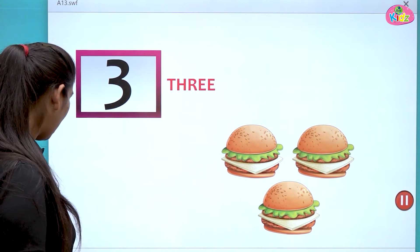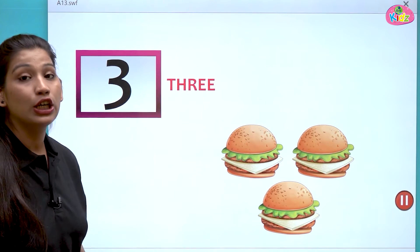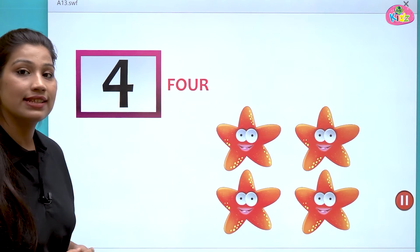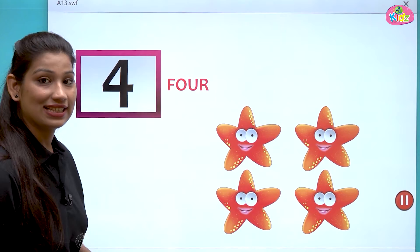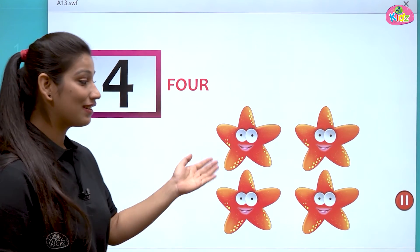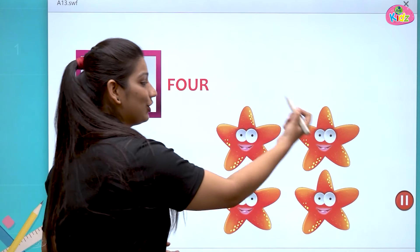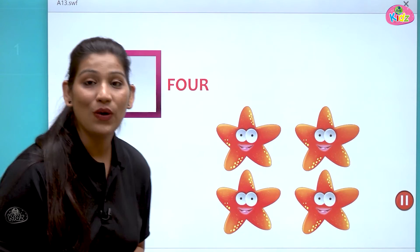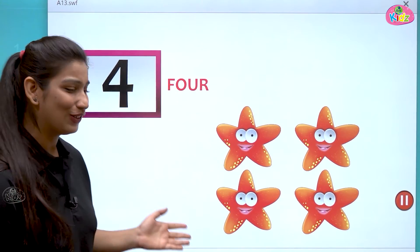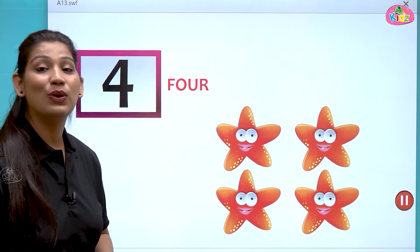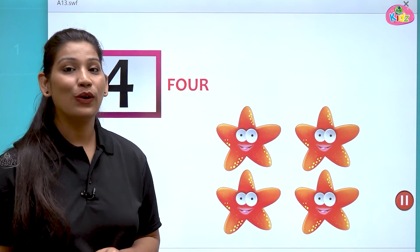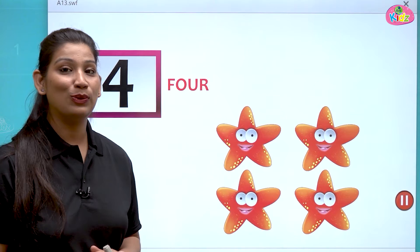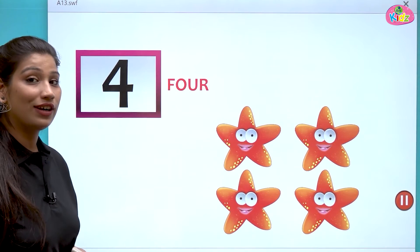After three there comes number four. Here you can see starfishes — let us count: one, two, three, four. There are four starfishes. The spelling is F-O-U-R, four. Four starfishes, they are looking too cute!